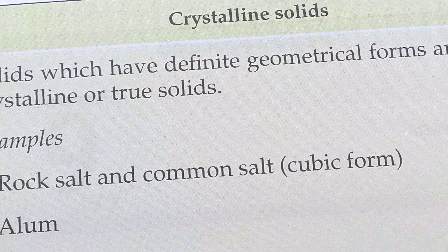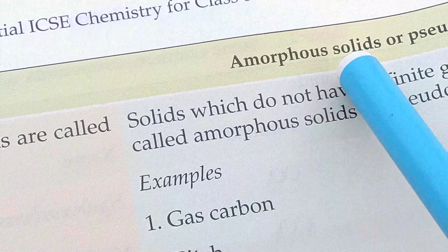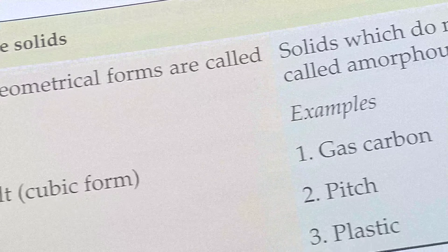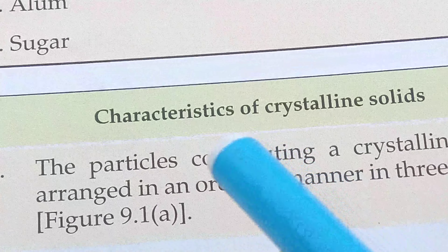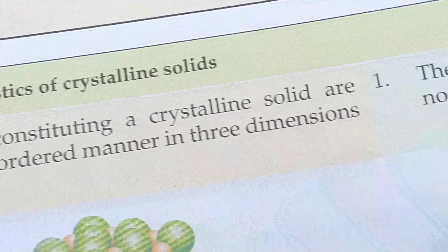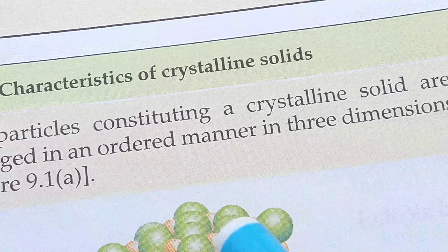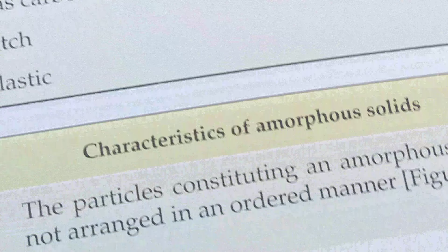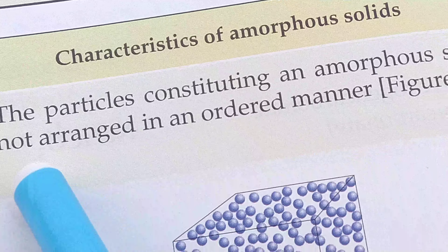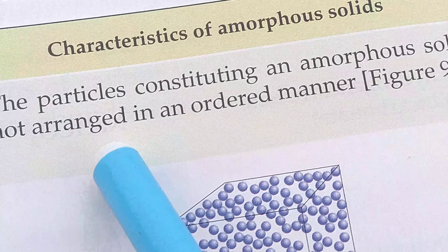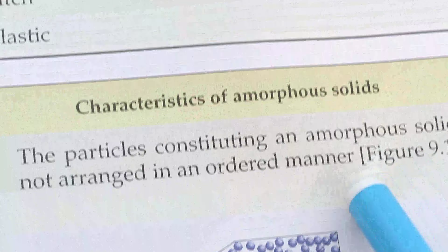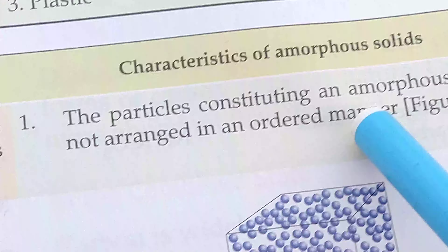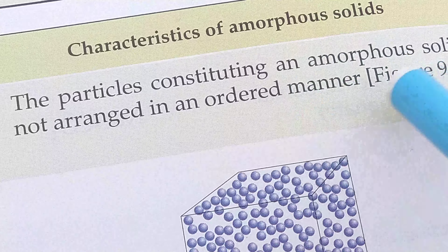Students, you have to learn these examples very carefully. The basic difference between crystalline and amorphous solids is that crystalline solids have a proper geometrical form, while amorphous solids have no proper geometrical form. In crystalline solids, the particles are arranged in an orderly manner in a three-dimensional figure. In amorphous solids, the particles are not arranged in an orderly manner.